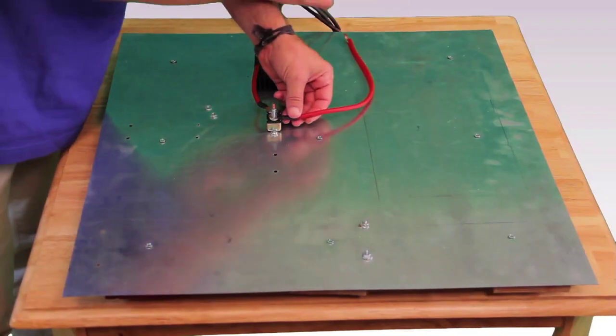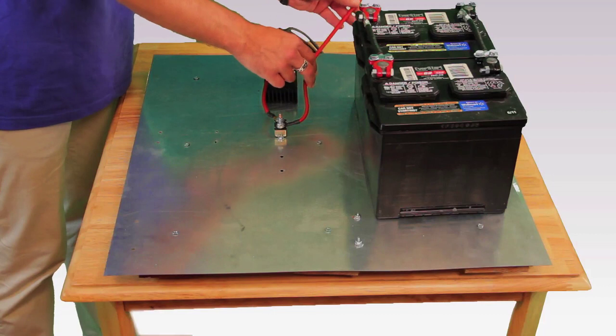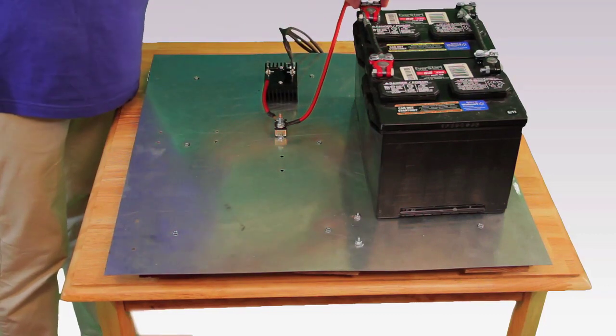From the other end of the circuit breaker we'll connect a new red wire and attach it to the positive terminal of the battery.